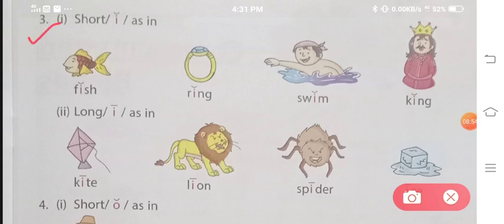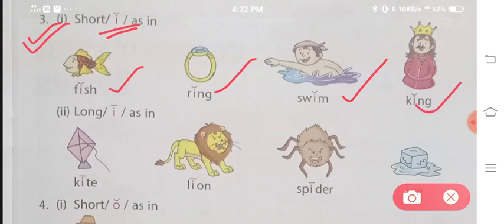The next is part three. Here we will talk about I. So now we will read the short sounds. Fish. Fish. Ring. Ring. Swim. Swim. King. King. In all the four, the sound of I is very short.